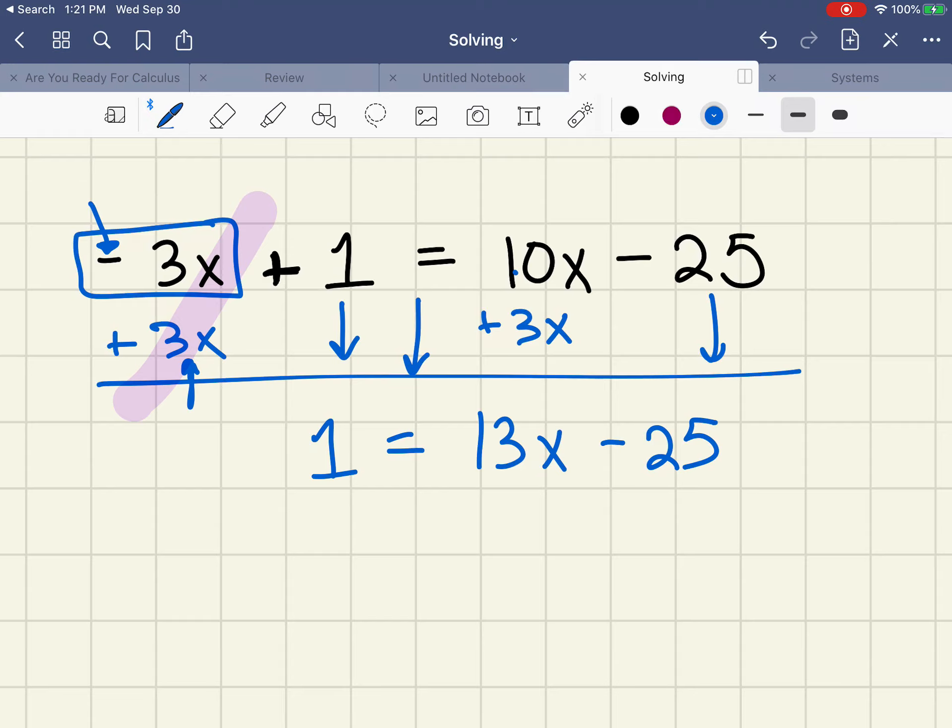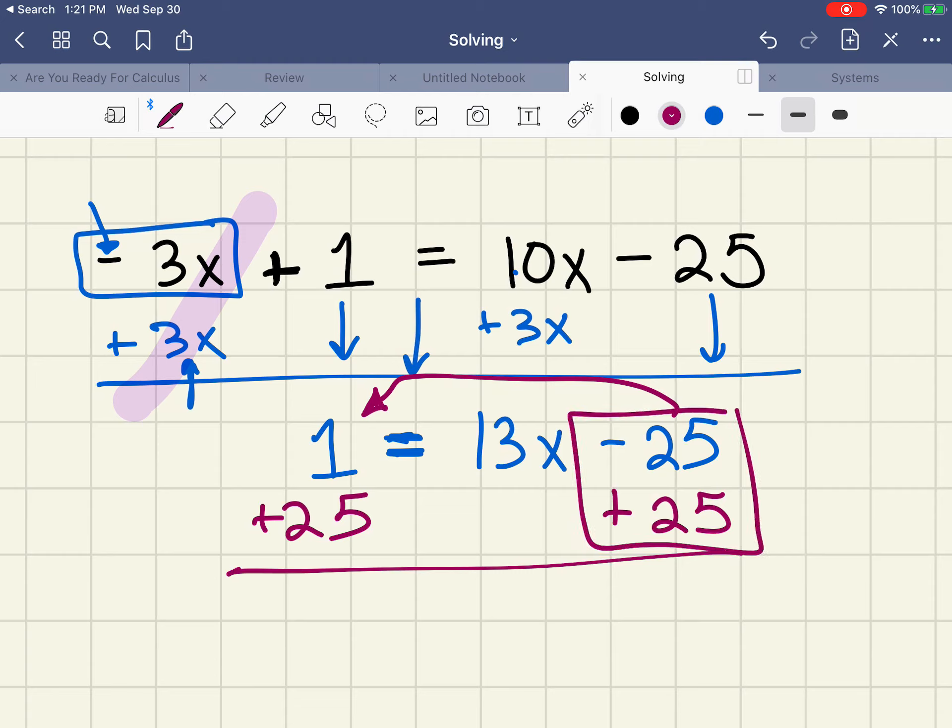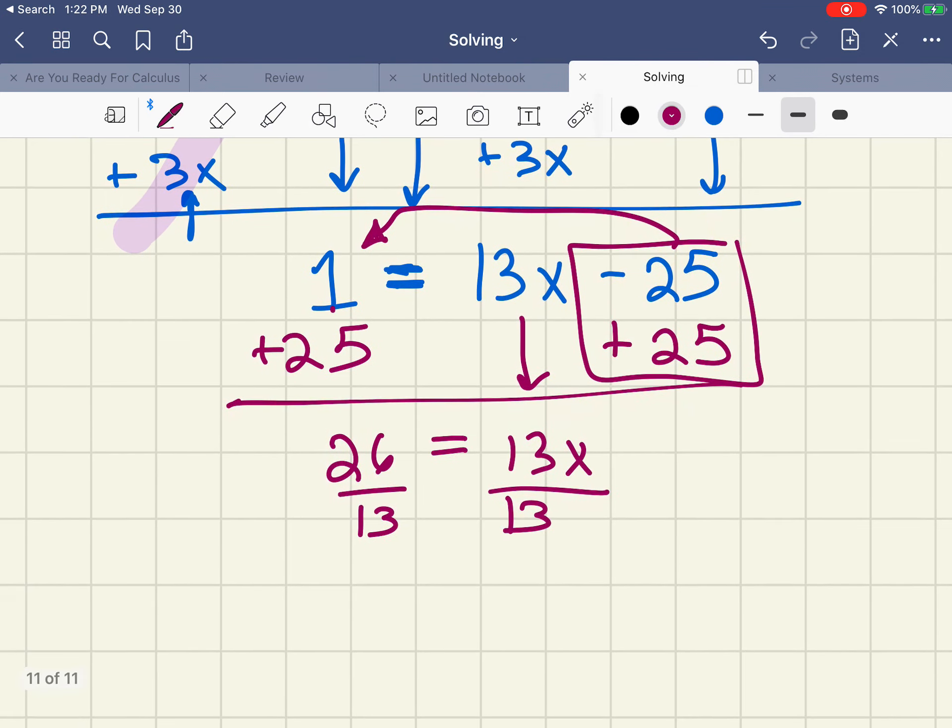Now I have a two-step equation. I'm going to add 25 because I want that to be with the number. I add 25 here, it essentially cancels this from that side, leaving the 13x alone. I have 1 plus 25, which is 26. Then I divide by 13. These cancel, leaving me x. 26 over 13 is 2, and I have x equals 2 as a solution.